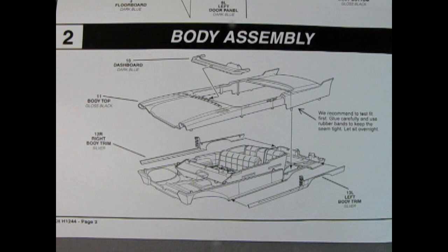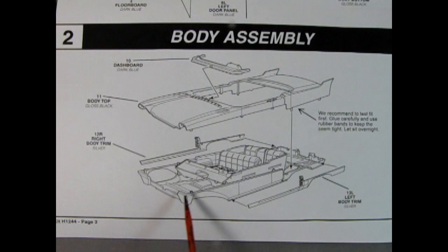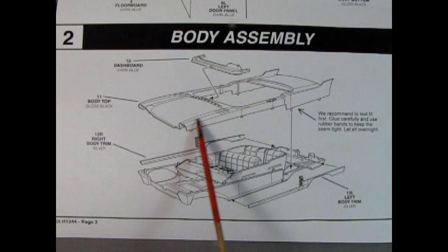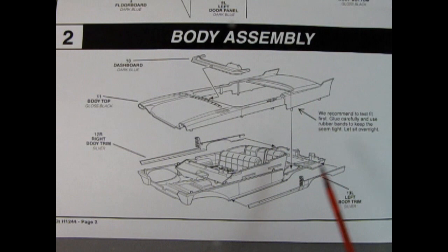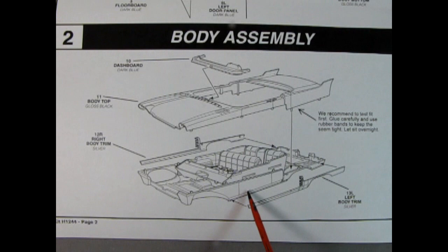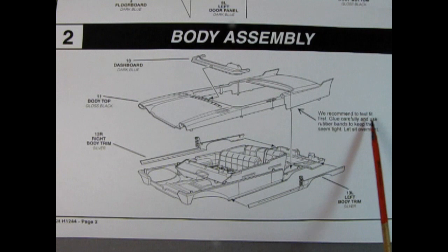Here we have step two, which is the body assembly. And now you can see what I was talking about with the body being molded right in the center of the belt line. So this body bottom, it doesn't have an engine in here, it's just a pan with an engine, kind of bottom part of an engine molded in place. Then the side of the car comes up here, and here is the rest of the car. It's like a clamshell, like I was saying. And you've got the dashboard top now being glued up underneath in the body with a pin. And then there is this body trim, which actually includes part of the door. So this would glue down onto the body shell, and then this would glue in here. And it says, we recommend to test fit first. Glue carefully and use rubber bands to keep the seams tight. Let sit overnight.